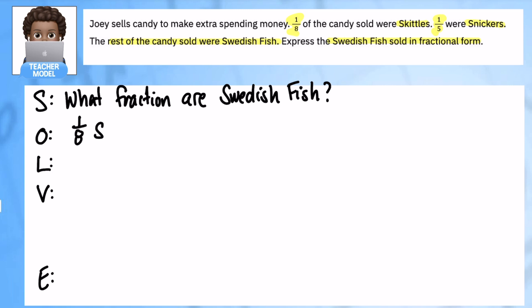And in terms of organizing my facts, I know that one eighth are Skittles, and I know one fifth are Snickers, and some number is my Swedish Fish. That's what I need to figure out. And I know that all of them add up to one.